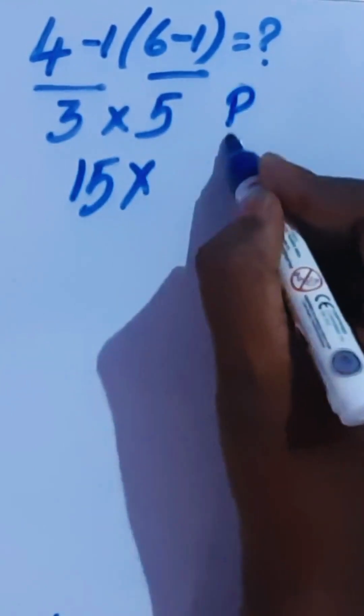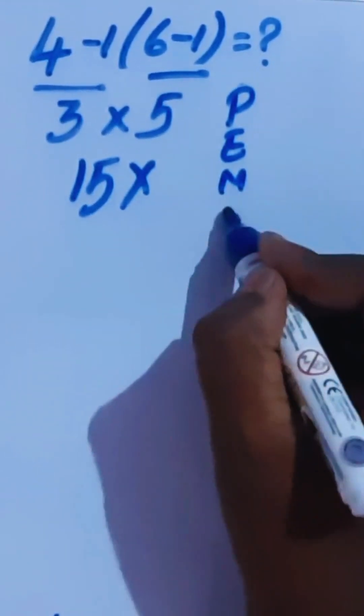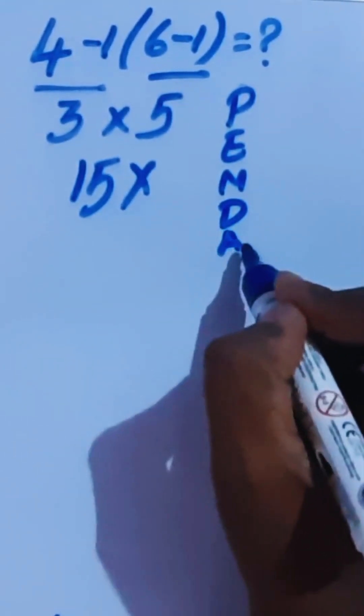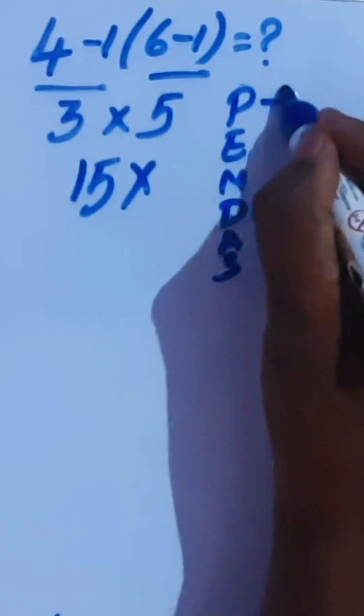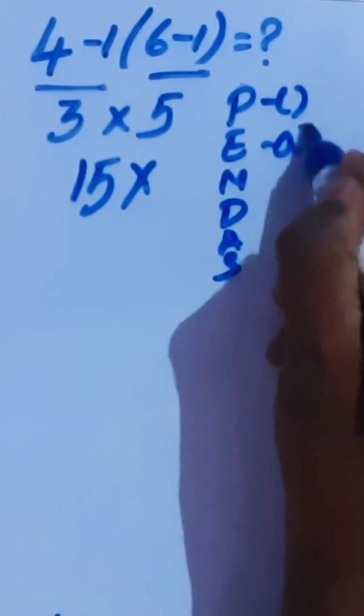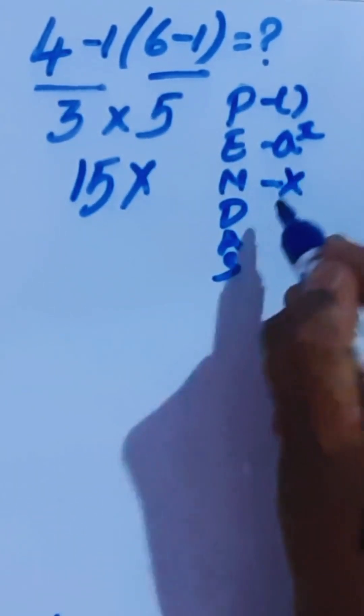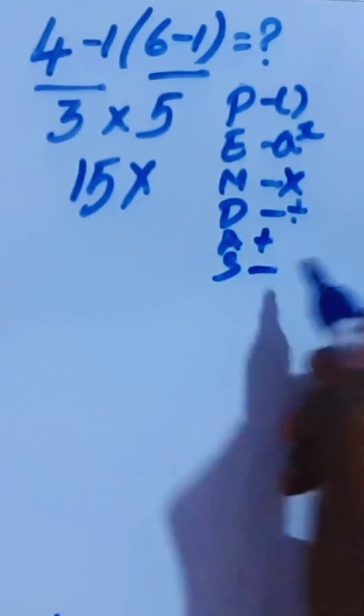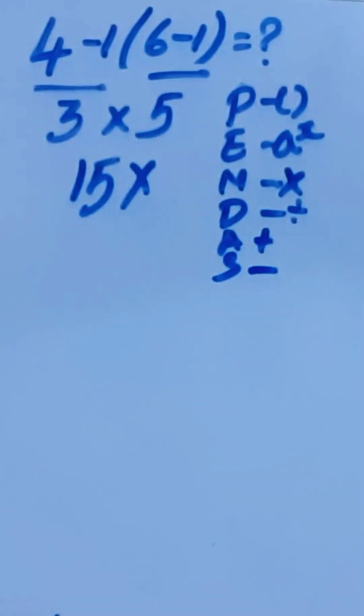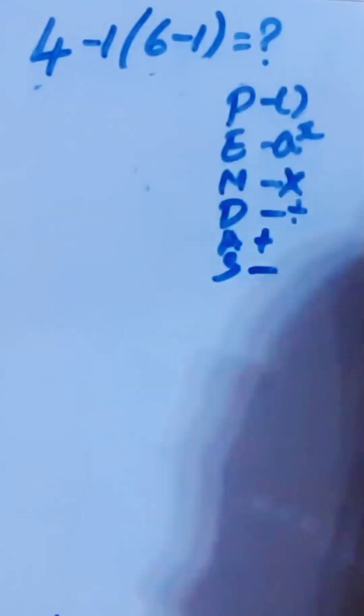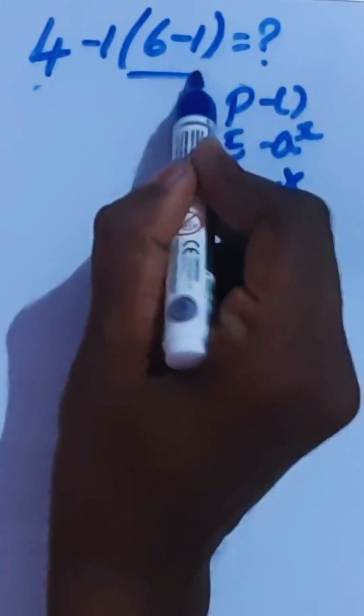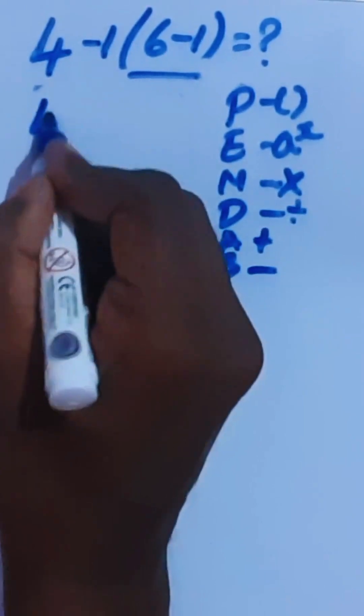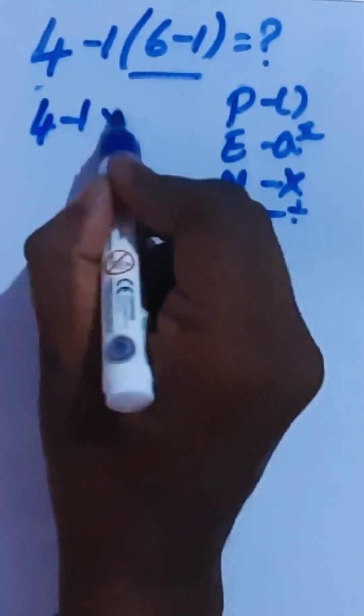As for the order of operations PEMDAS, this is bracket, multiplication, division, addition, subtraction. We are going to do this problem the correct way by using this order of operations. Brackets have higher priority, so 4 minus 1 times 6 minus 1 equals 5.